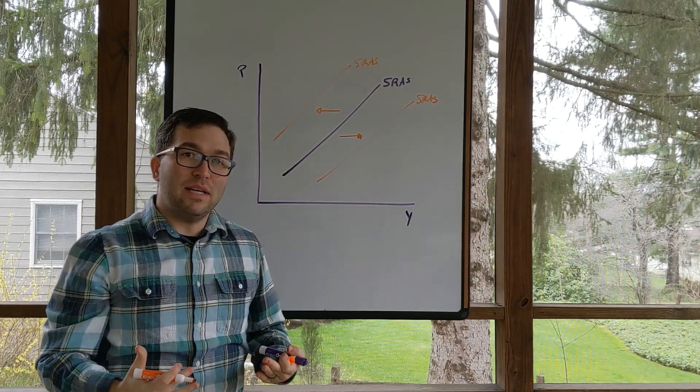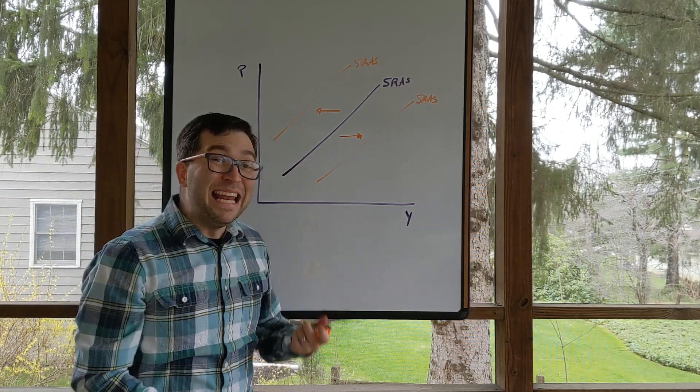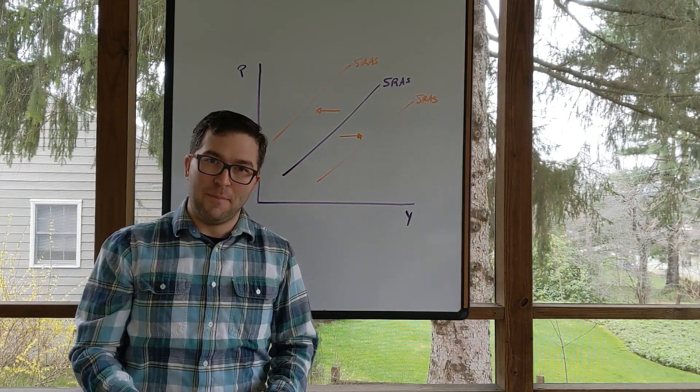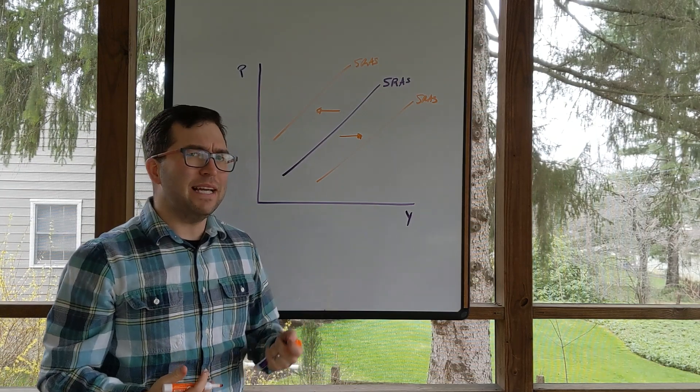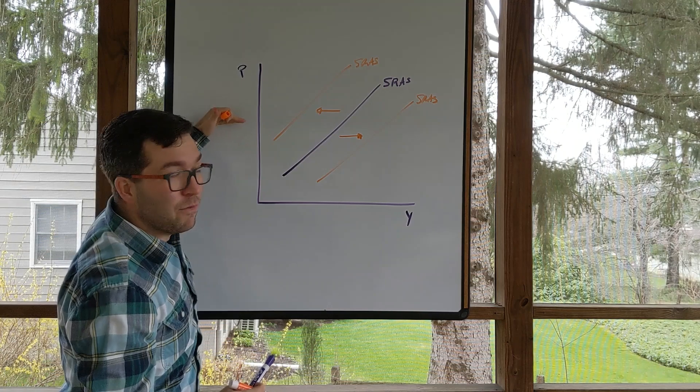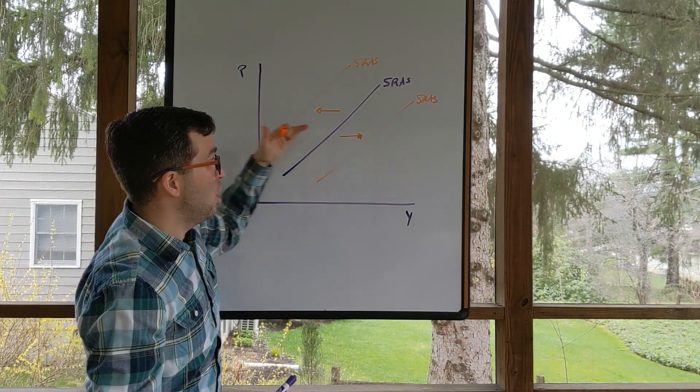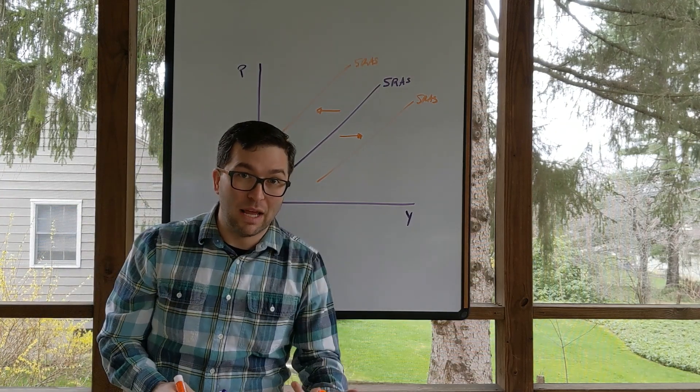Go ahead back to your readings and look at the things that shift short run aggregate supply. It's going to be anything that shifts long run aggregate supply, also changes to expectations and changes to input prices. Things that if the price level initially were to stay the same, would we see increases or decreases in short run aggregate supply.